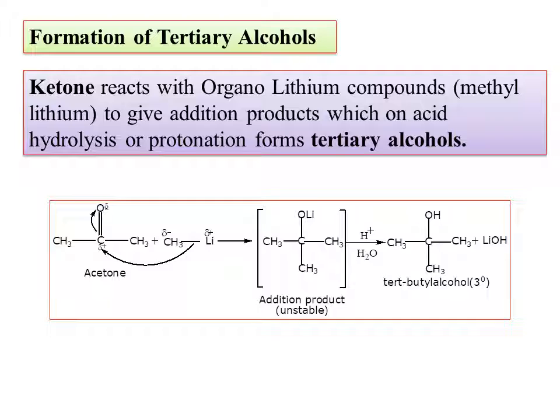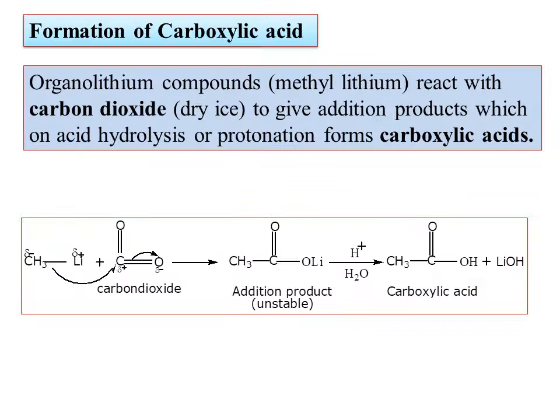Primary, secondary, or tertiary alcohols can be prepared from organolithium compounds by changing the reactant: formaldehyde gives primary alcohol, an aldehyde gives secondary alcohol, and a ketone gives tertiary alcohol. Similar to Grignard reagents, organolithium compounds are also called synthetic reagents.